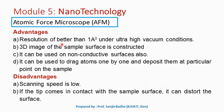The advantages of the atomic force microscope include: resolution of better than 1 angstrom under ultra-high vacuum conditions can be achieved; a 3D image of the sample surface can be constructed; it can be used on non-conductive surfaces, so whether the surface is conducting or non-conducting does not matter; and it can be used to drag atoms one by one and deposit them at a particular point, meaning manipulating the position of atoms is possible.